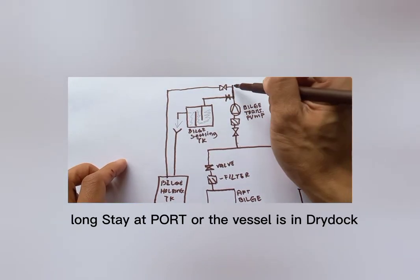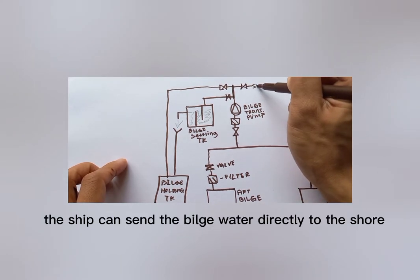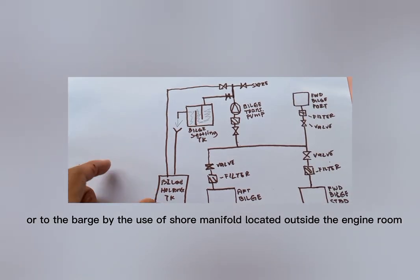When use of oily water separator is prohibited, the ship can send the bulge water directly to shore or to the barge by the use of shore manifold located outside the engine room.